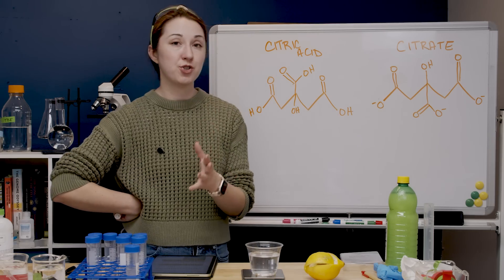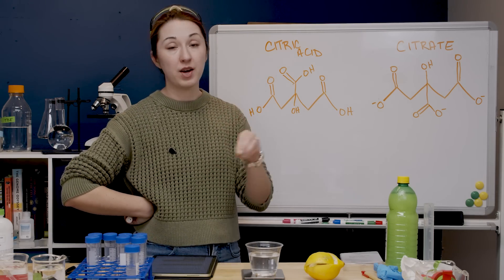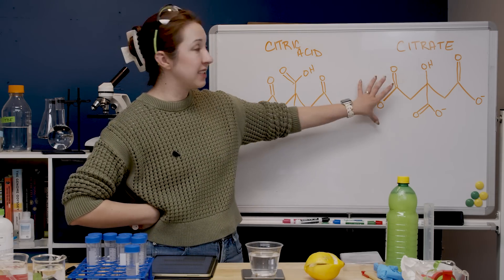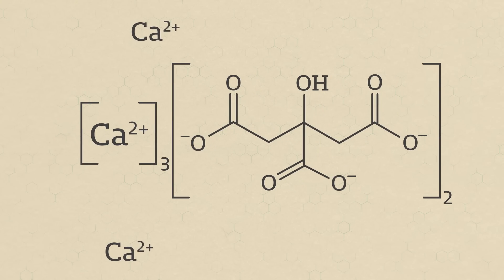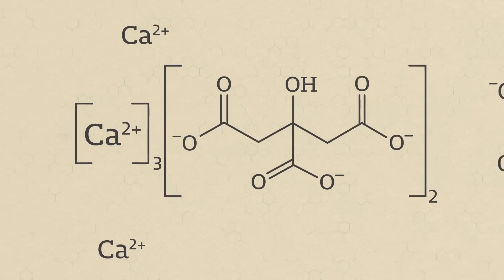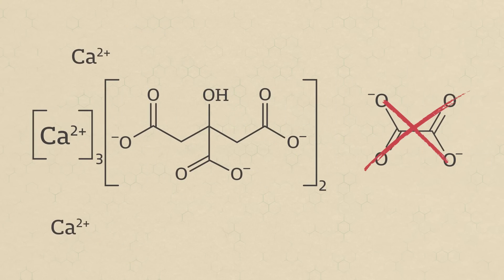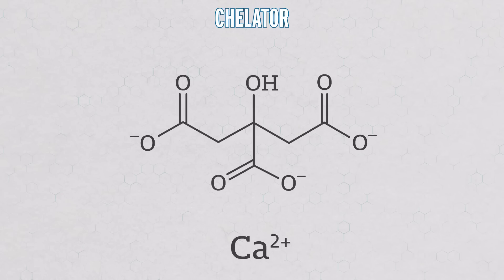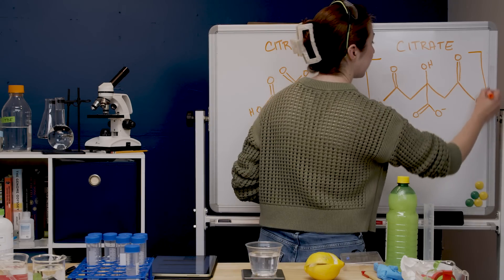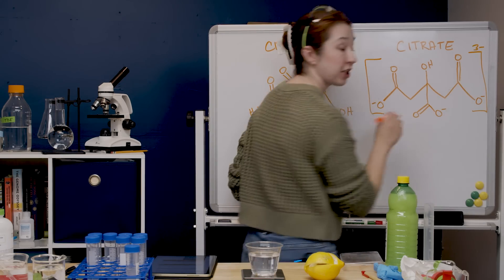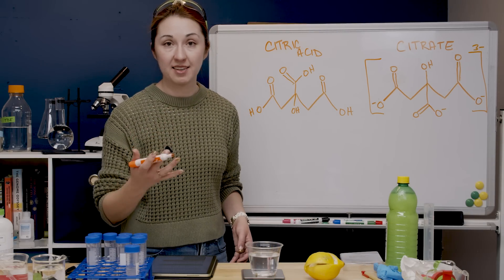And so doctors will sometimes actually prescribe citrate drugs to patients who have recurrent kidney stones because this negatively charged citrate can actually go around in your urine and bind to free floating calcium preventing it from binding to the oxalate and forming calcium oxalate kidney stones. Citrate is a chelator, a name for an organic molecule that binds to metal ions like calcium. Because remember you could look at this and it has a three minus charge on it so it can bind to positively charged calcium ions.